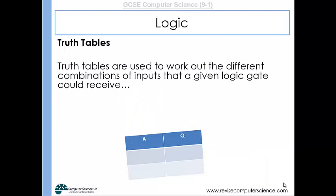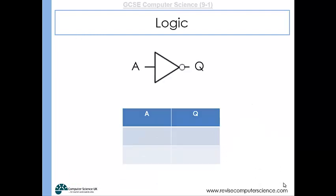Truth tables are used to work out the different combinations of inputs and what the outputs will be in those circumstances. For a NOT gate, because there's only one input, it could receive a one or a zero. If it receives a one, the output would be zero. If it receives a zero, the output would be one. That is a truth table for a NOT gate.